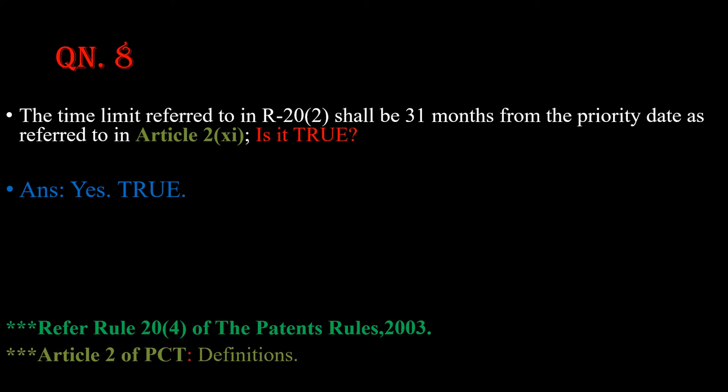Question number 8: The time limit referred to in rule 20 subrule 2 shall be 31 months from the priority date as referred to in article 2. Is it true? The answer is yes, the statement is 100% true. Please refer rule 20 subrule 4 of the Patents Rules 2003. Article 2 of PCT — the Patent Cooperation Treaty — has the title Definitions.